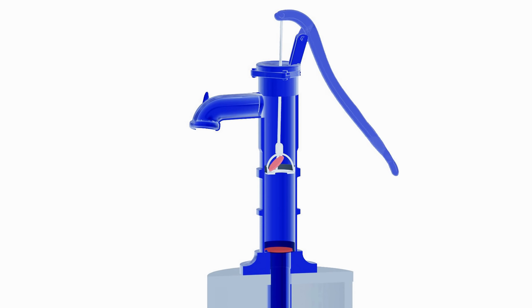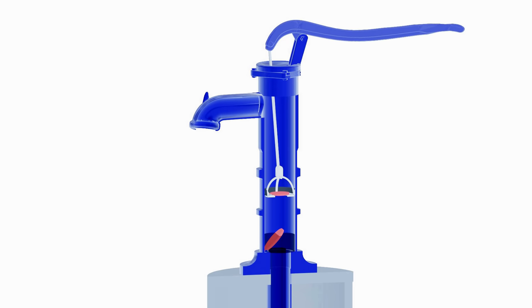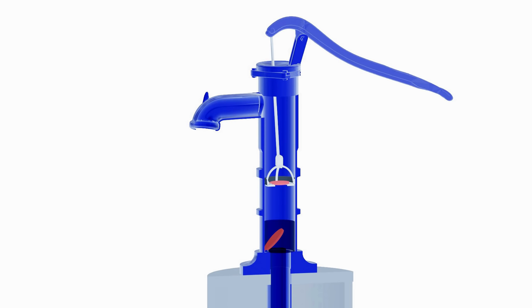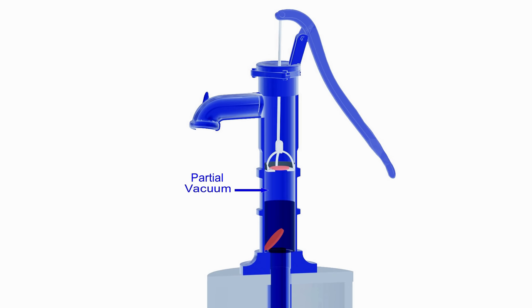The working mechanism of the pump is shown in the animation. When the handle is pushed downwards, the piston moves vertically upwards. During this cycle, the piston valve closes and the foot valve opens. This forms a vacuum below the piston valve.